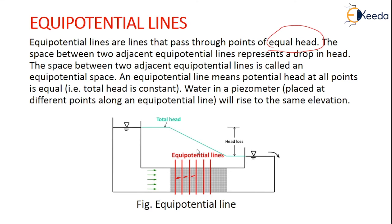Also, the space between two adjacent equipotential lines is called an equipotential space. These are the spaces. So an equipotential line means potential head at all points is equal, that is, the total head is considered constant.